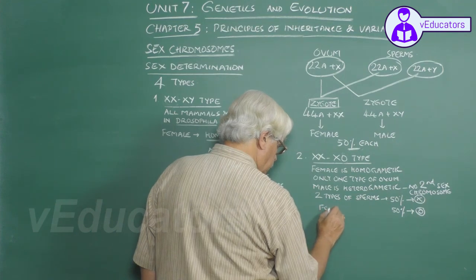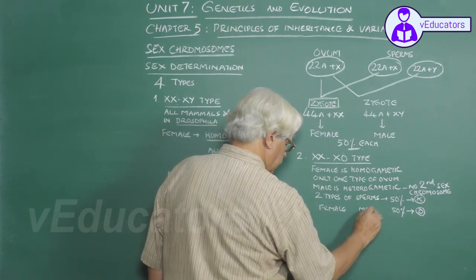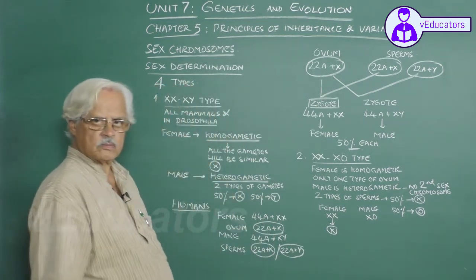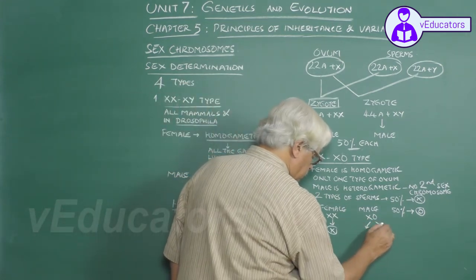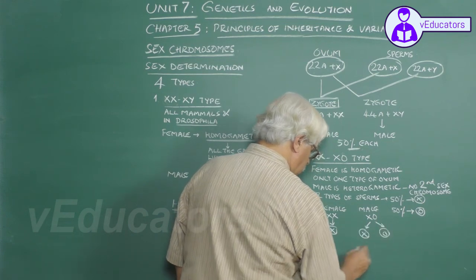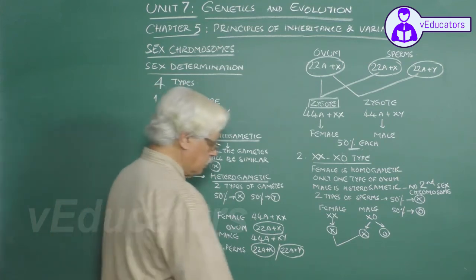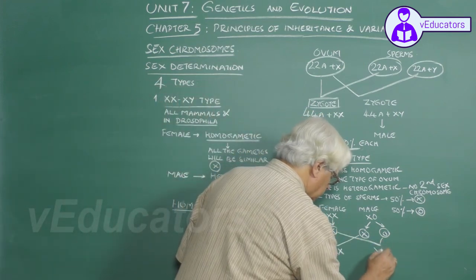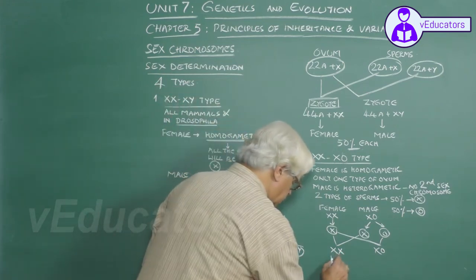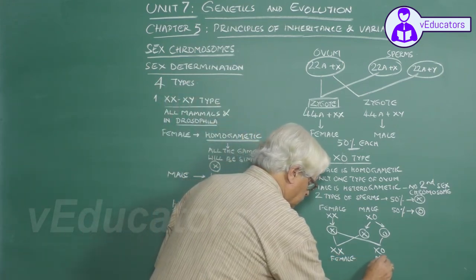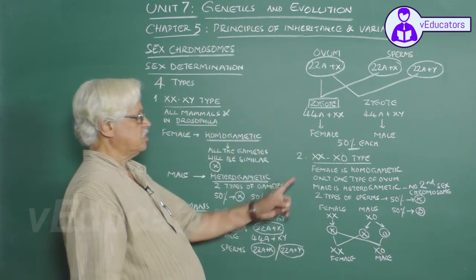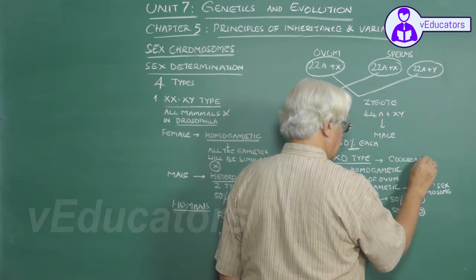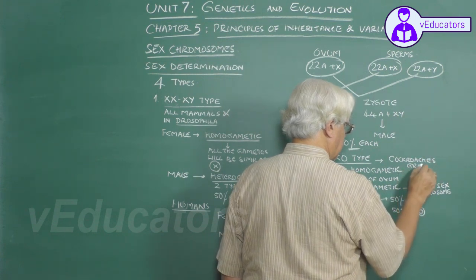To represent this situation: female is XX and male is XO, where O means no sex chromosome. Sperms are of two types, X and O. When the X sperm fuses with the ovum, the zygote becomes XX — a female. When the O sperm fuses, the zygote becomes XO — a male. This type of sex determination is observed in some insects like cockroaches and grasshoppers.